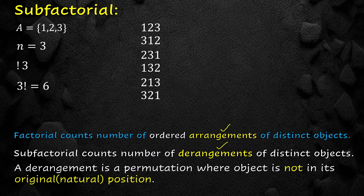A derangement is a permutation where no object is in its original or natural position. To find the derangements, we shall cancel out the ordered arrangements where elements 1, 2, 3 are in their original positions. The original position of 1 is first, original position of 2 is second, and original position of 3 is third. We cancel out arrangements where each element is in its original position.